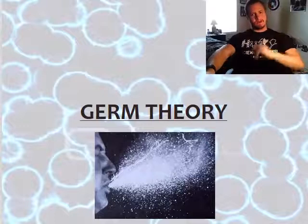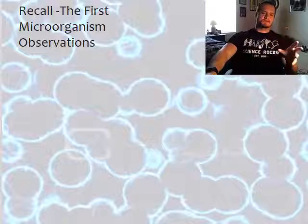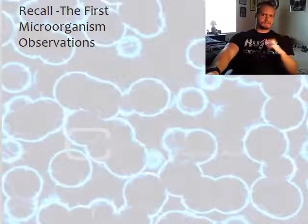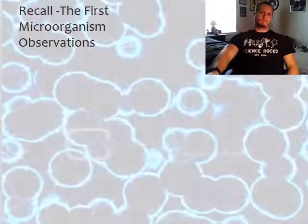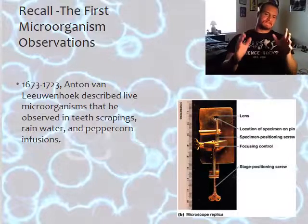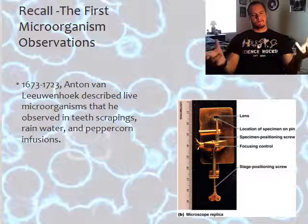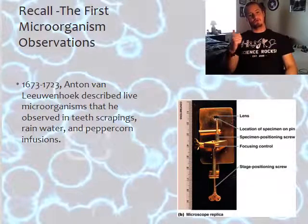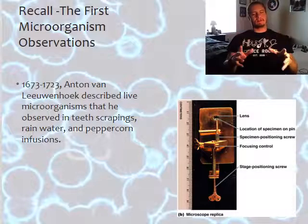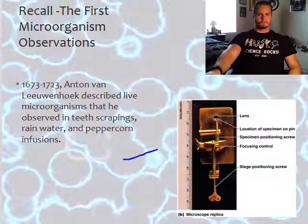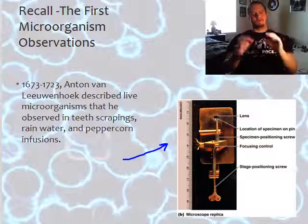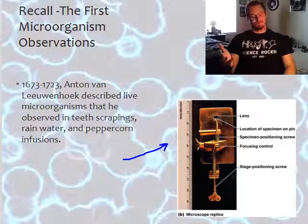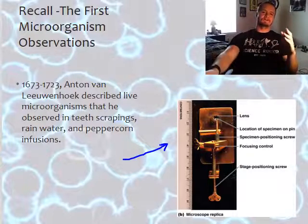Let's get started. If you think back to the very first microorganism observations — do you remember which scientist did that? In 1673 to 1723, there was a man by the name of Anton von Leeuwenhoek. He described live microorganisms that he observed in teeth scrapings, rainwater, and peppercorn infusions. He looked at them under his custom microscope and saw tiny moving organisms — he actually thought they were monsters at one point. What he saw were the first living microorganisms, or the first cells.